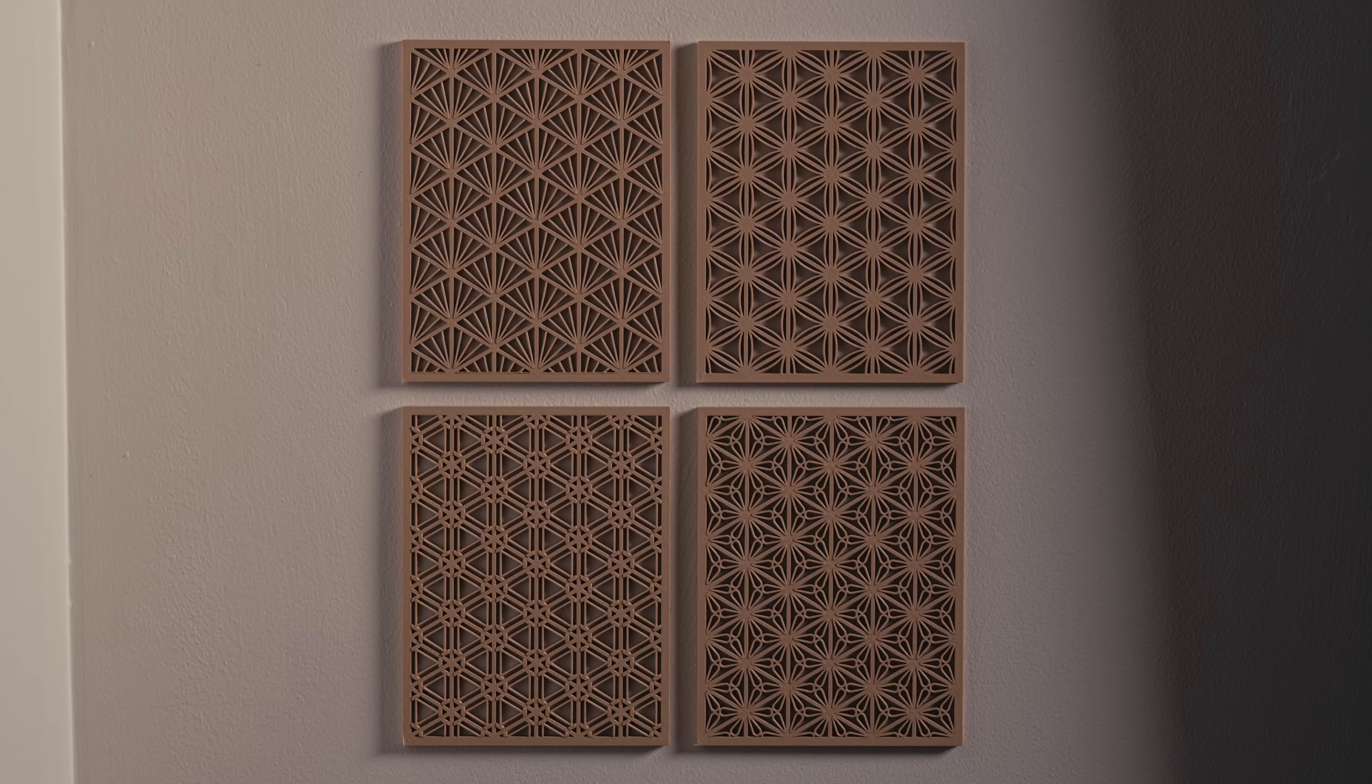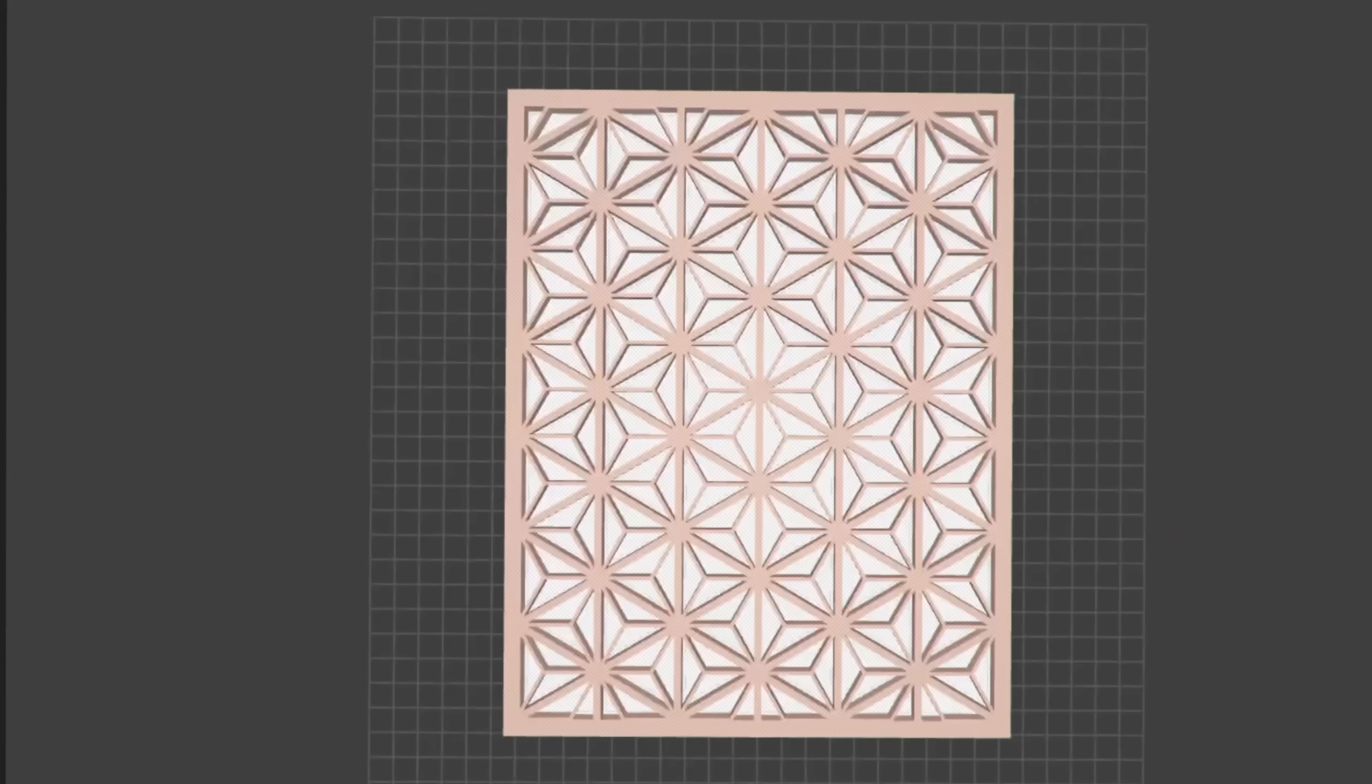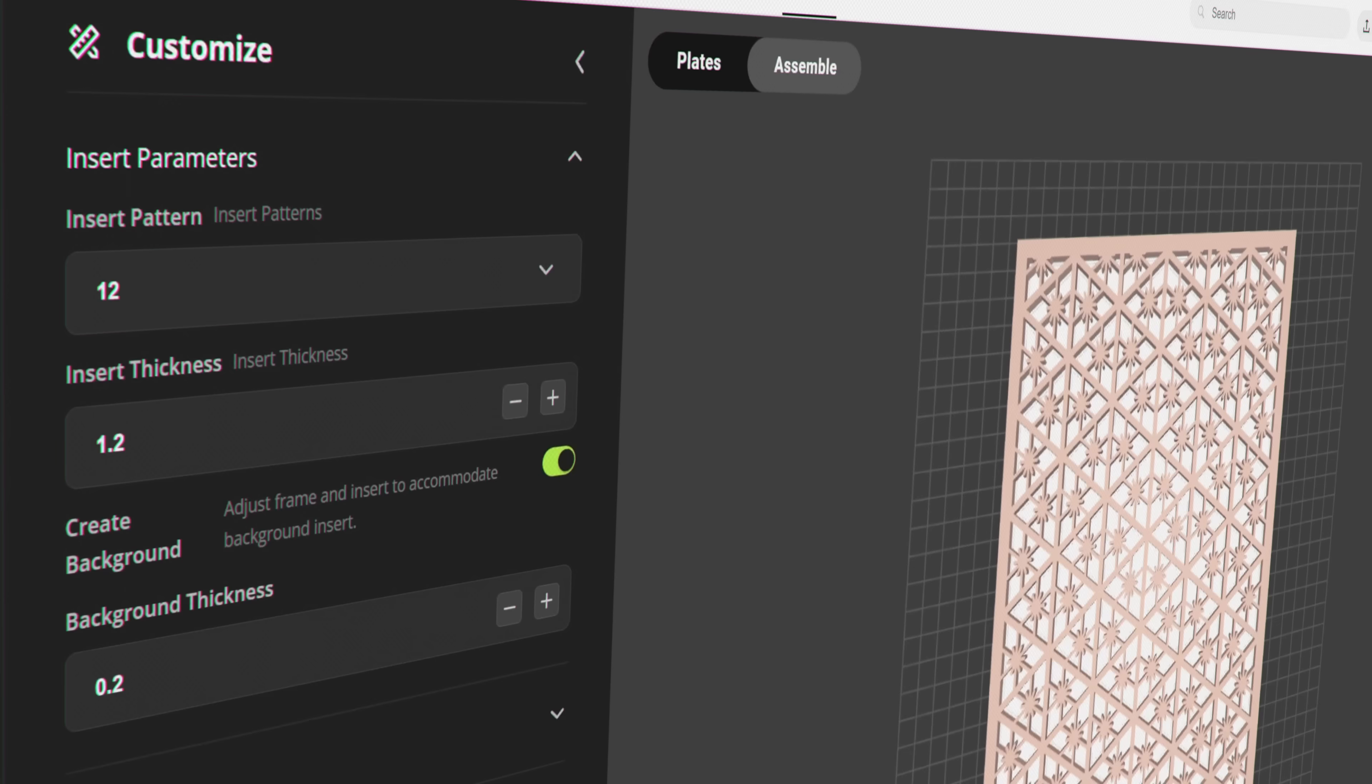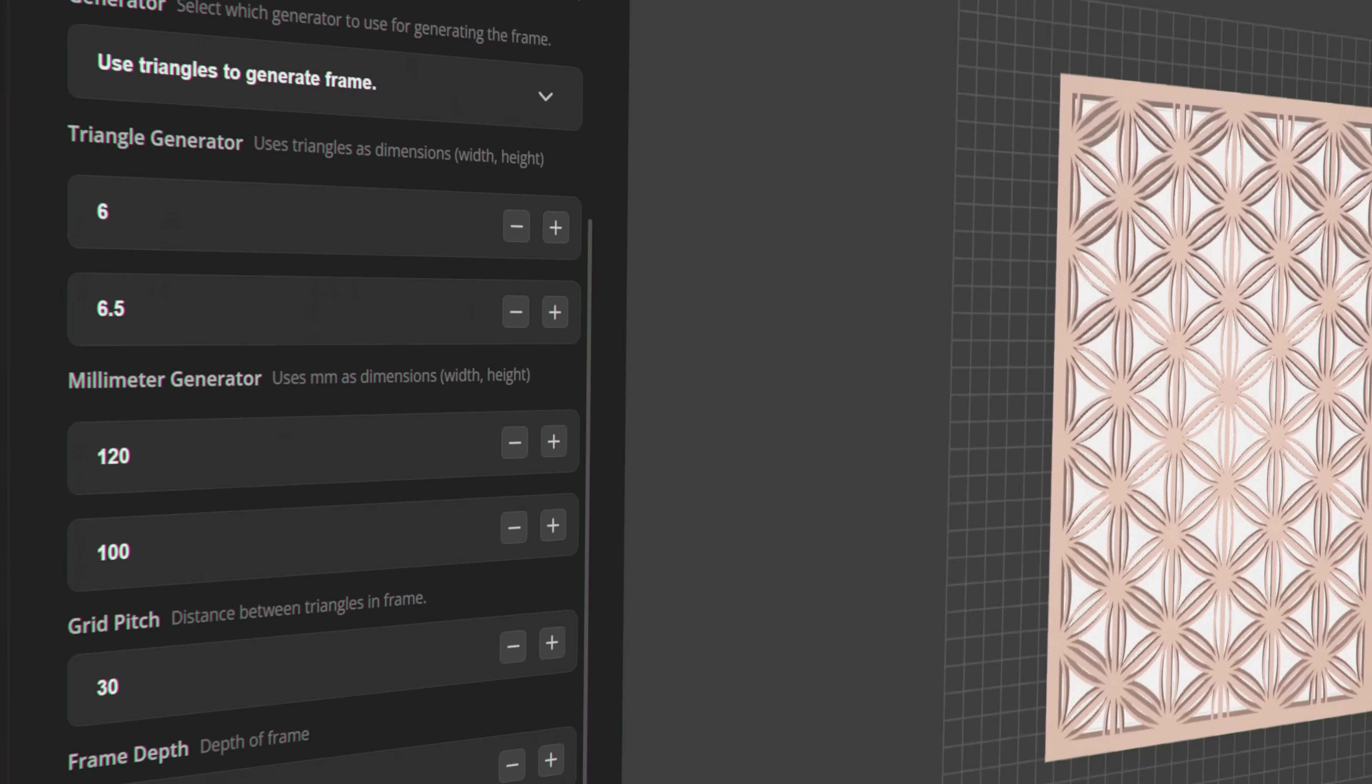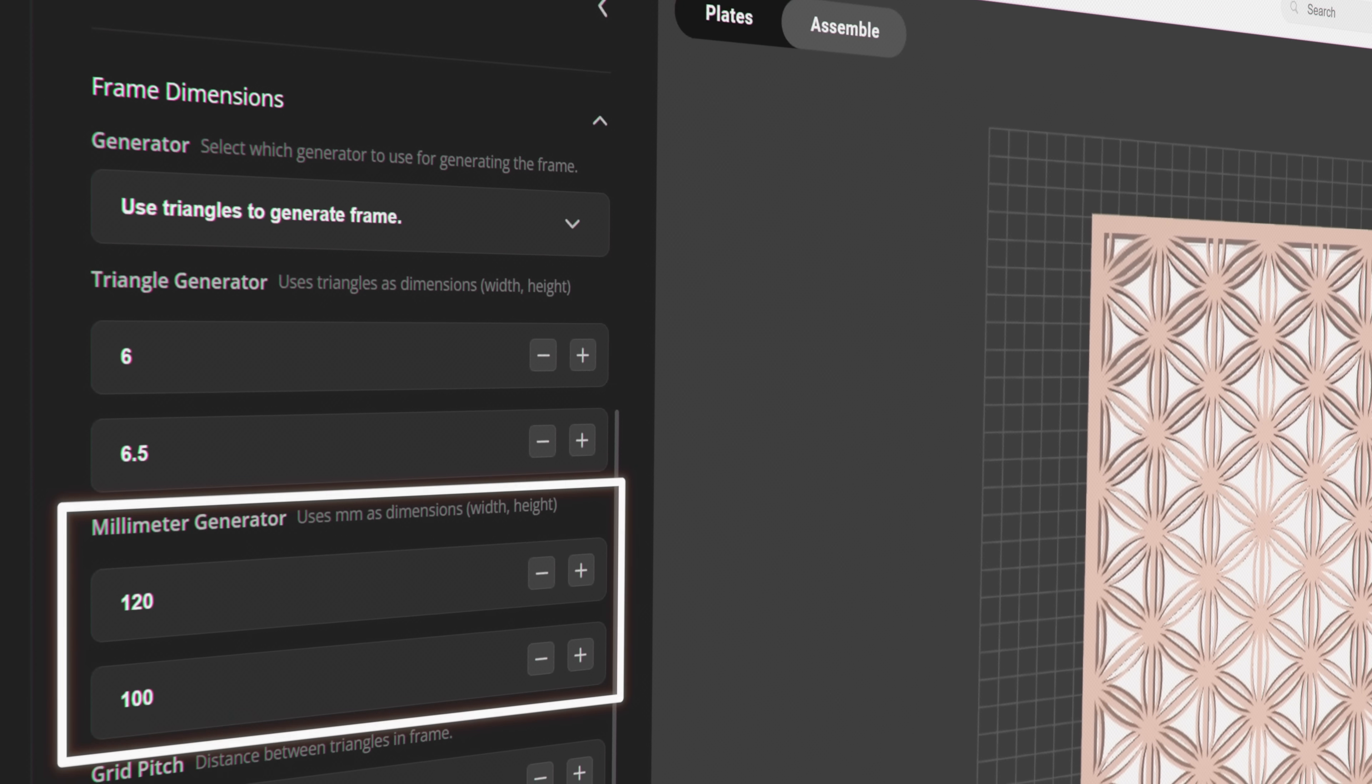Now, if you want to make your own miniature panel like the ones shown here, these were all created using a model that I made available on Maker World. This model lets you customize the panel however you'd like. You can adjust the inserts, change the color of the panel, and of course modify the dimensions based on the number of triangles or the exact millimeter dimensions that you need.